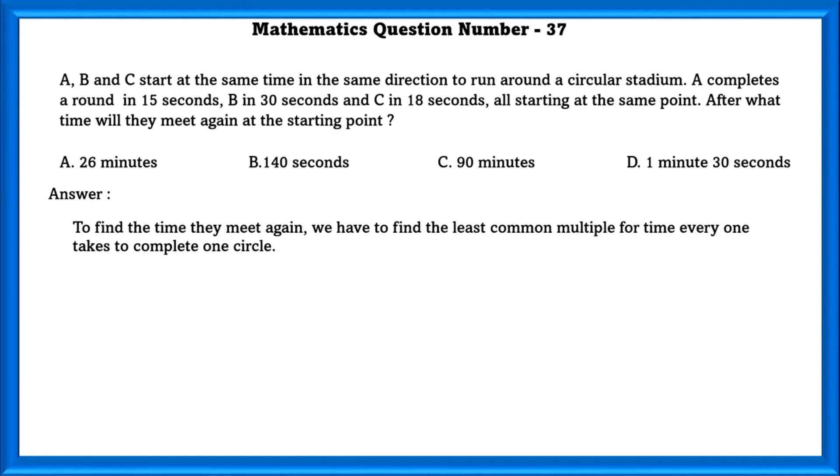To find the time they meet again, we have to find the least common multiple for time everyone takes to complete one circle. So LCM of these numbers is equal to 90 seconds which can also be written as 1 minute 30 seconds.